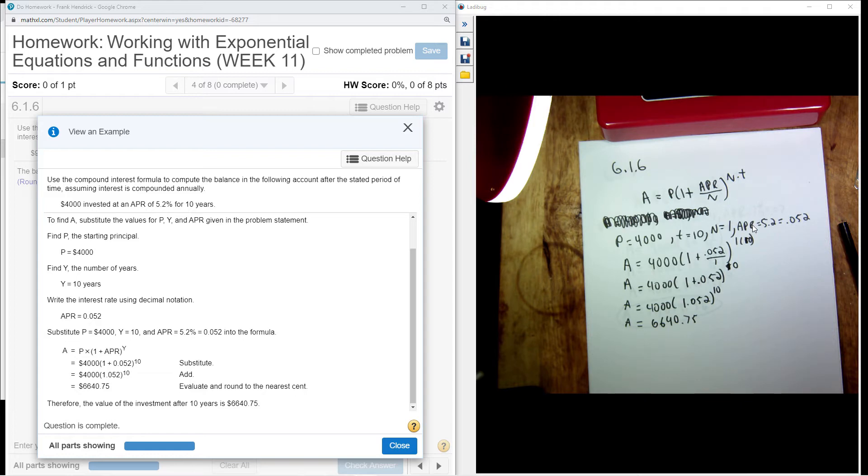APR is 5.2%, so as a decimal it'll be 0.052. Then I plug into my formula here.